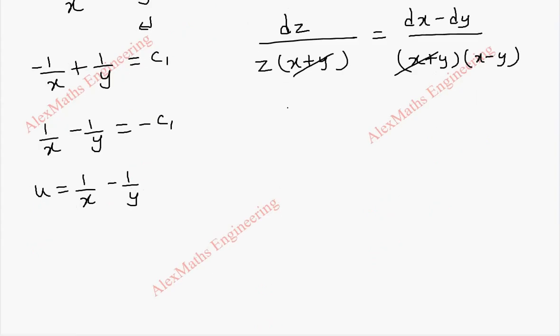Now, this is dz by z equal to, if I take d common, d of x minus y. This is of the form dt by t. On integration, this gives log t.